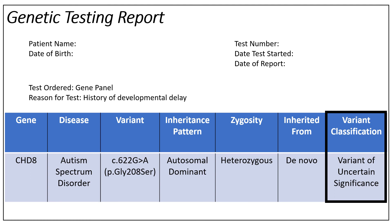Finally, VUS means there is not enough evidence to say that a variant is associated with health or developmental differences — more information is needed. In this example, the variant was classified by the laboratory as variant of uncertain significance, meaning that it has an uncertain or unclear impact on health.